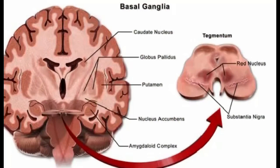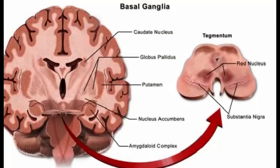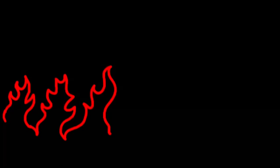Now we will be seeing the subcortical centers which are responsible for movement disorders. In these circuits, there is a complex interplay between fire (excitatory) neurotransmitters and ice (inhibitory) neurotransmitters. First, let's see the icy centers.